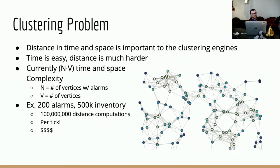So what problem was I trying to address? Two of Alec's clustering engines, the DBSCAN engine and the TensorFlow engine, both depend on time and space distances between faults on an inventory topology graph. The time delta between two alarms is trivial to calculate since it's just a simple difference between two absolute values. However, the distance calculation is much harder to compute since two nodes with faults may have several paths to each other and the links on each path might have different costs.